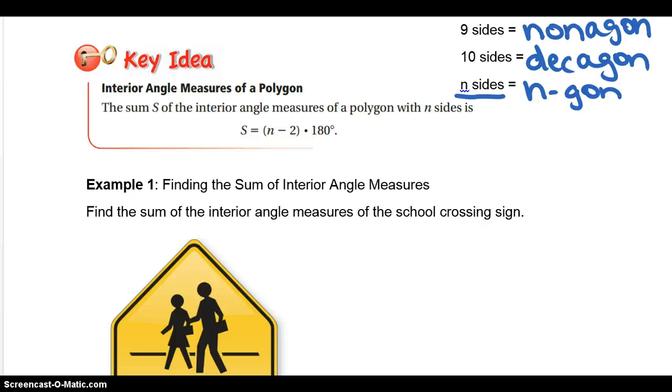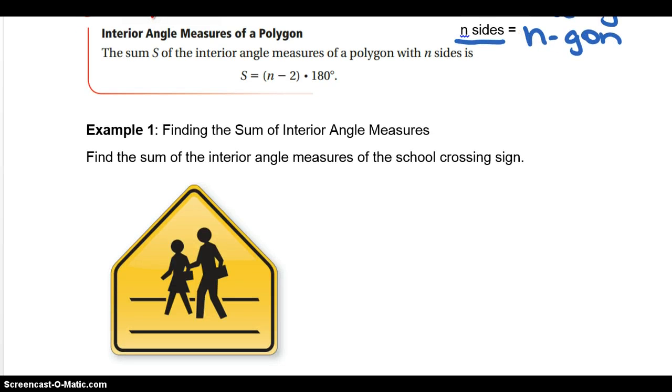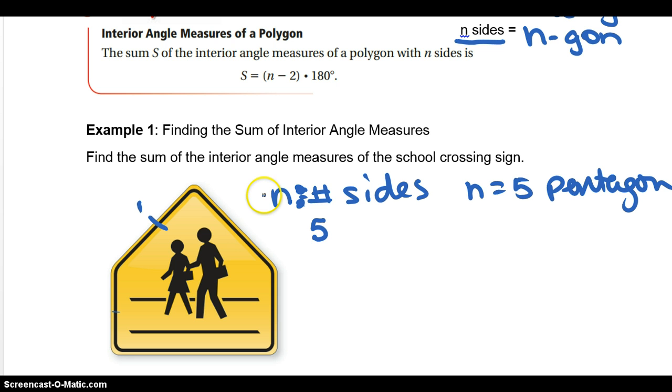So example one, it says find the sum of the interior angle measures. So first thing that we need to do is find out how many sides does this have. So n is going to represent the number of sides. So then we count. And I usually put some kind of a mark here to know that that's where I started. So 1, 2, 3, 4, 5. So we ended here at 5. So it has five sides. So n equals 5. So if you were naming this, it would be a pentagon.